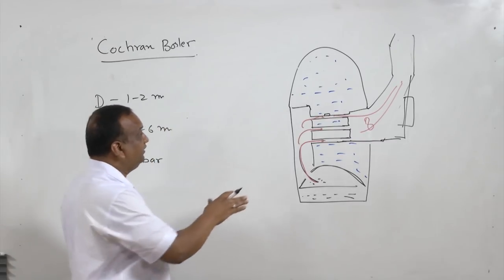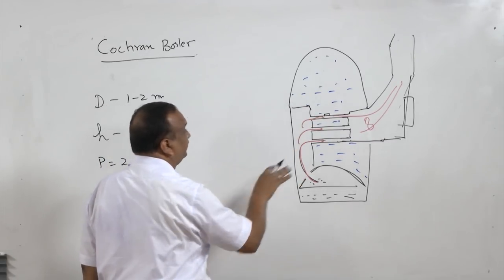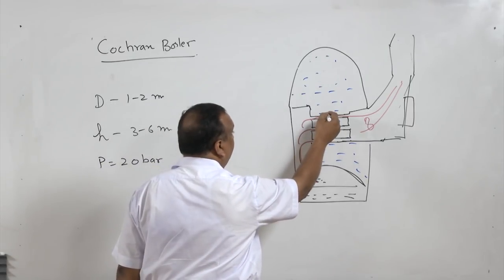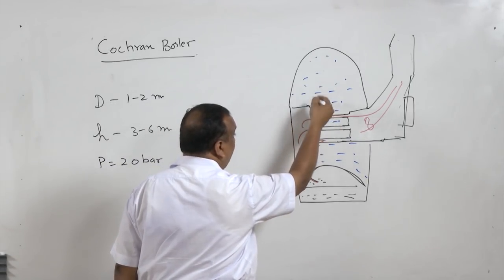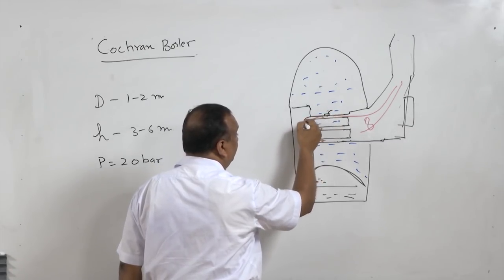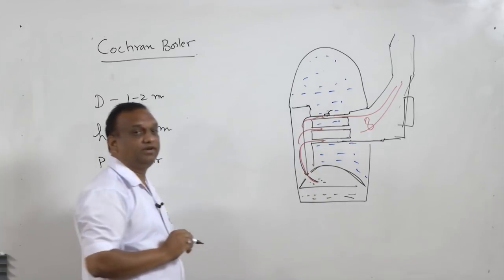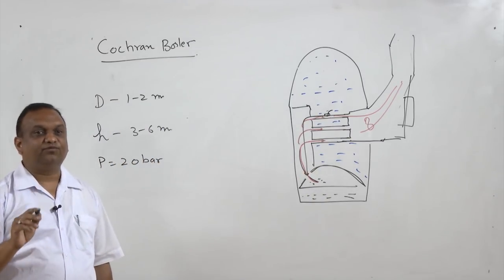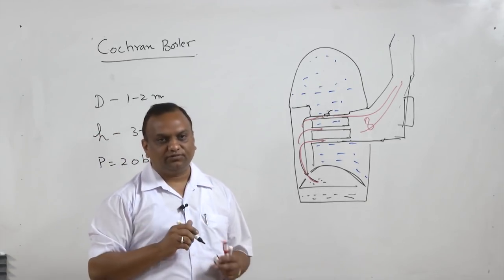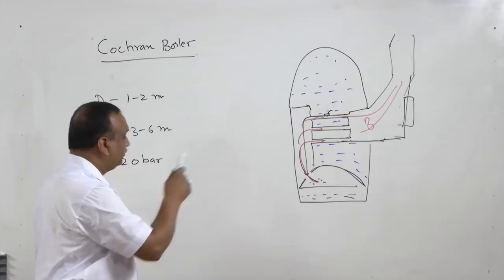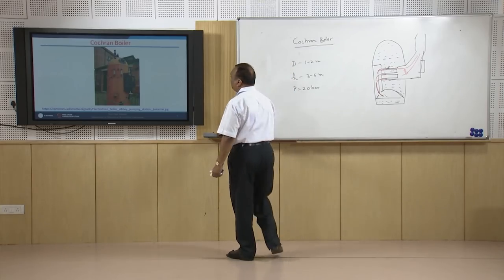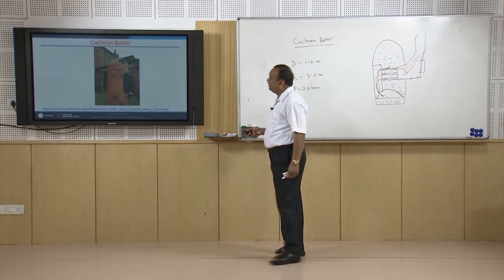If there is an interruption in the supply of water, or the water level goes down, or the water is overheated, the fusible plug will melt and subsequently the boiler will get extinguished. The working of the fusible plug will be explained when we discuss the mountings and accessories of the boiler. This is the functioning of the Cochrane boiler.